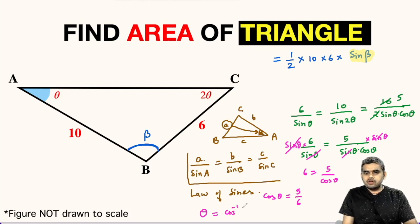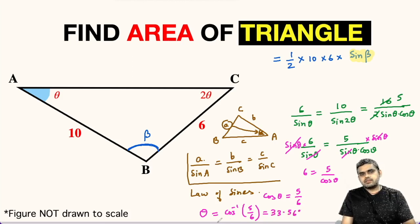From here we can write theta equals cos inverse 5 upon 6, and this will be equal to approximately 33.56 degrees. So this theta is 33.56 degrees.